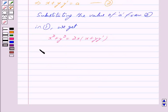This implies x² + y² is equal to, opening the brackets we get, 2x² + 2xyy'.